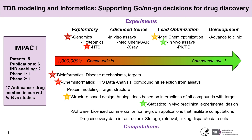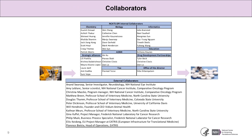And 17 anti-cancer drug combinations in current in vivo studies. Molecular modeling and informatics project impact is only made possible by finding and maintaining extensive collaborations, both within and outside of NIH. This emphasizes its importance in drug discovery.